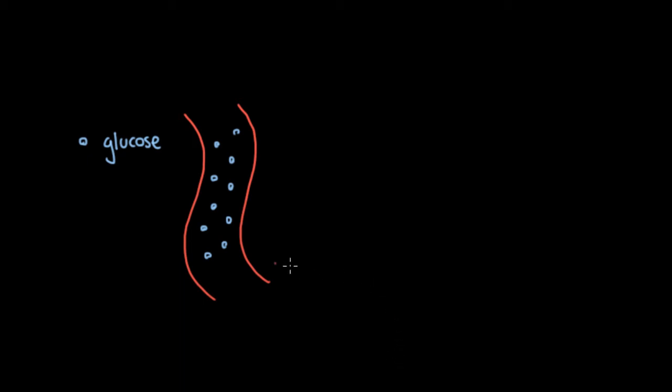In the last two videos we've talked about how after a meal you have a lot of glucose in your blood. And we mentioned in the first video that there are three different cells in which your body is going to store that glucose so that you can use it over a long period of time.